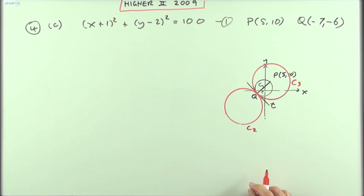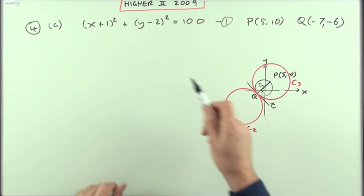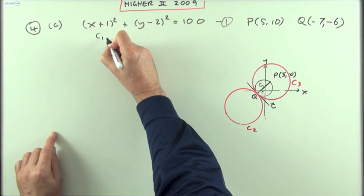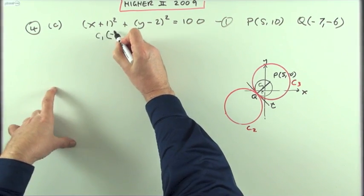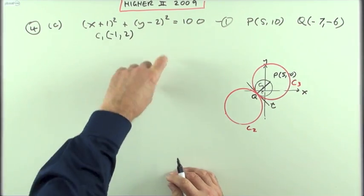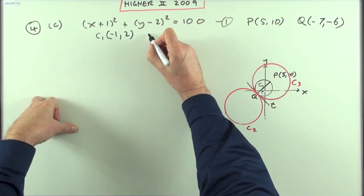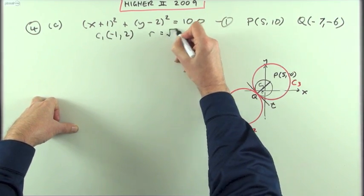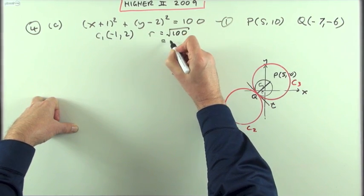I want the equation of a circle, so that means I need to have its center and its radius. Let's get the sizes again. What was the center of this? Once again it's the opposite of that and the opposite of that, x minus the x coordinate, y minus the y coordinate, and the radius is quite simple, it's the square root of 100 which is 10.